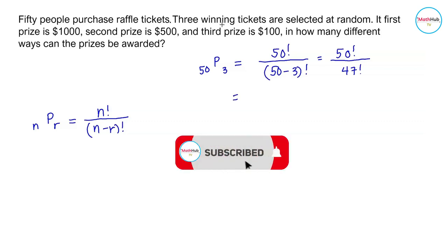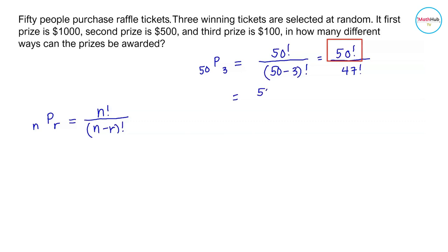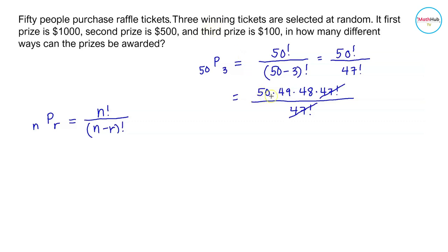We rewrite 50! as 50 × 49 × 48 × 47!, copy 47! in the denominator, cancel 47!, and multiply 50 × 49 × 48 to get 117,600 ways.